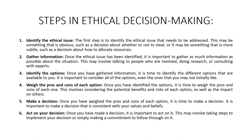To summarize the steps in six precise steps: first, we need to identify the ethical issue that needs to be addressed. This may be something obvious, such as a decision whether or not to steal, or something more subtle, such as a decision to allocate resources. Once the ethical issue has been identified, it is important to gather as much information as possible about the situation. This may involve talking to people involved, doing research, or consulting with experts.